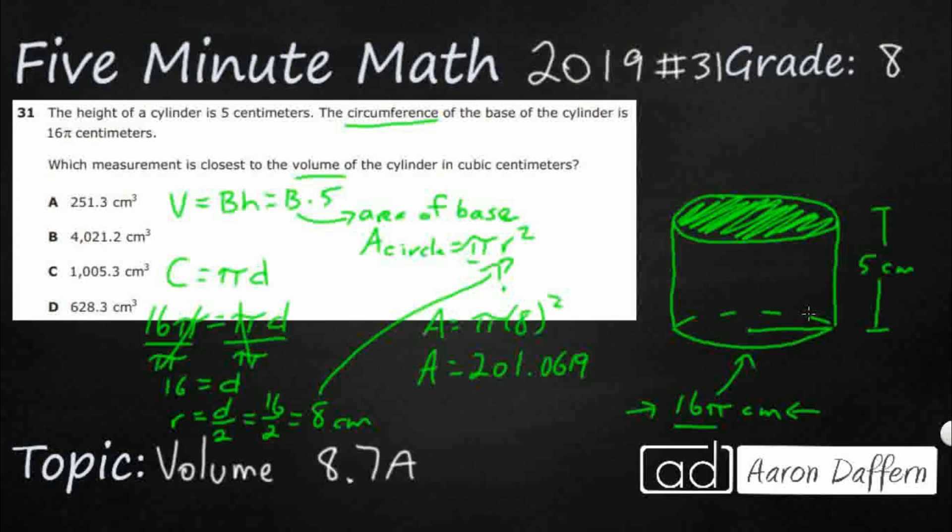Now I've got to plug this into this equation right there. So the volume is going to equal this right here and then times five because that's my height. And I'm going to have about 1005.30. And so here we go. My answer is C.